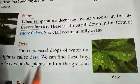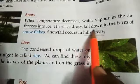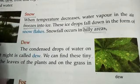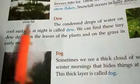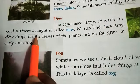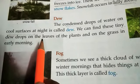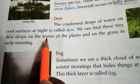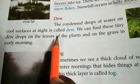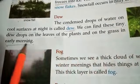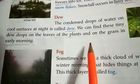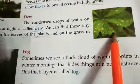In hilly areas, there is a lot of snowfall. The condensed drops of water on a cool surface at night is called dew. When the surface is very cold at night, water present in the atmosphere forms tiny drops. You can see dew drops on the leaves of plants and on the grass in the early morning, especially when winter season is coming.